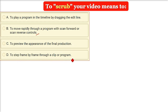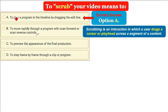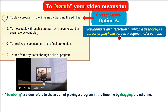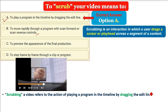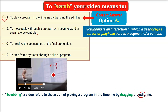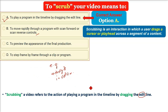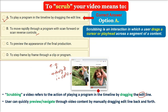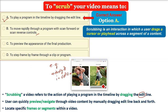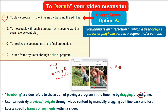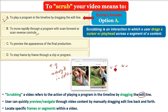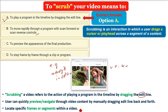Yes, you guessed it right — it's option A, which is scrubbing. Scrubbing a video refers to the action of playing a program in the timeline by dragging the edit line. This allows the user to quickly preview and navigate through the video content by manually dragging the edit line back and forth. Scrubbing is a common technique used in video editing software to precisely locate specific frames or segments within a video.